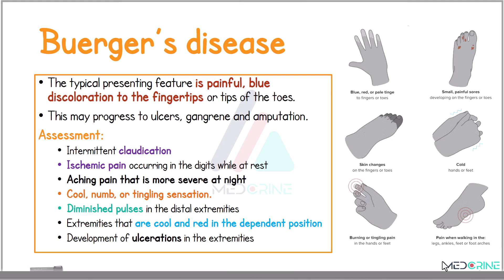Other symptoms of Buerger's disease include intermittent claudication, ischemic pain in the digits even at rest, and a dull aching pain that worsens at night. This disease affects the limbs, making them feel cool, numb, or tingling.